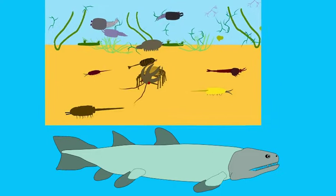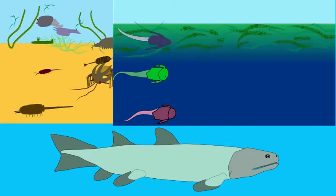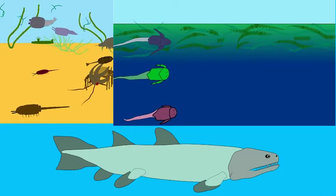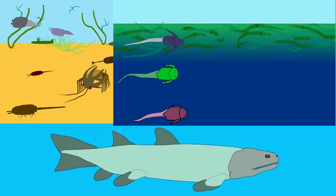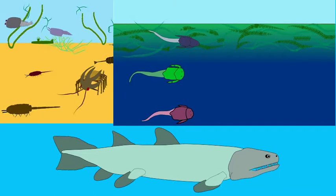In the Devonian, a number of fish could be found near coastal environments in freshwater environments and a few might even have been able to come out onto land.